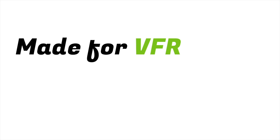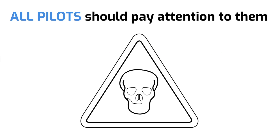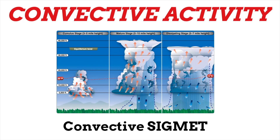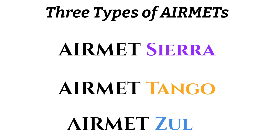Sometimes the National Weather Service issues additional weather data specifically for VFR pilots — these are called AIRMETs, which stands for Airmen's Meteorological Information. These are specifically made for VFR pilots, particularly those flying single-engine light aircraft, but all pilots should pay attention to AIRMETs because they can let you know about weather that might be hazardous to you. One thing they won't tell you about is convective activity or thunderstorms — they have a different advisory called a convective SIGMET for those. There are 3 different types of AIRMETs: AIRMET Sierra, AIRMET Tango, and AIRMET Zulu.